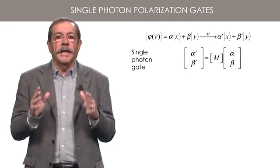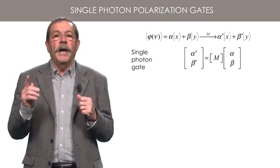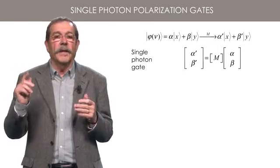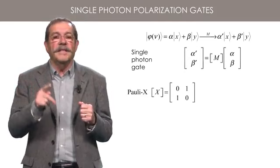Some gates are particularly important for our discussion. With a half-wave plate aligned 45 degrees from the x and y axis, one can realize a gate that changes x into y and vice versa.